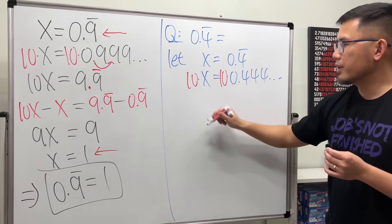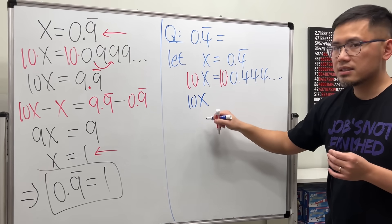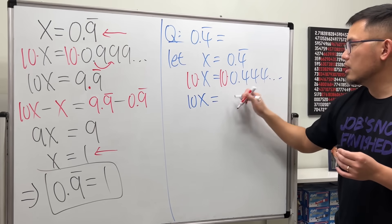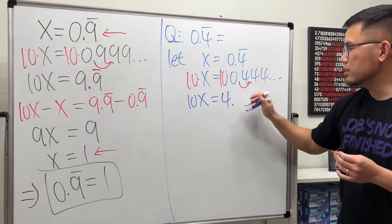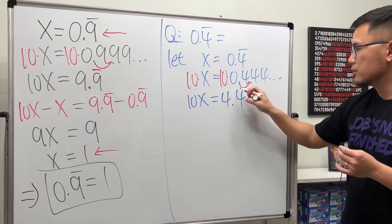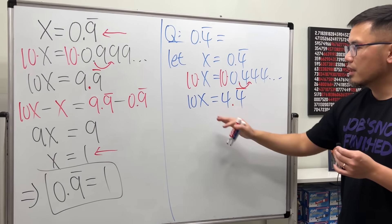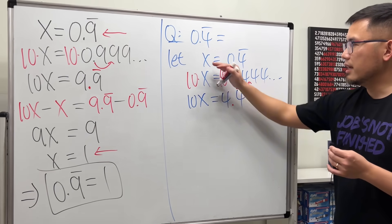Multiply this by 10. On the left-hand side, we have 10x. On the right-hand side, move the decimal point to the right one time. We have 4.4 repeating. So let's put a bar right here. Now, 10x is this, and x is that.